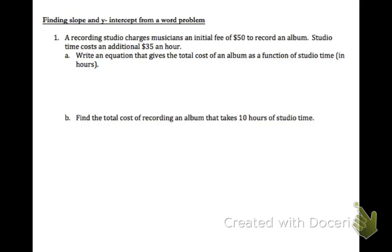A recording studio charges musicians an initial fee of $50 to record an album. Studio time costs an additional $35 an hour. Anytime you're doing word problems in this unit, think about which of these numbers happens just once, and which one happens over and over again. In terms of slope and y-intercept, slope happens over and over — it happens multiple times — and b, your y-intercept, happens only once. So in this case, the 50 is an initial one-time fee, that's our b, and the 35 is our m, because it happens every hour.